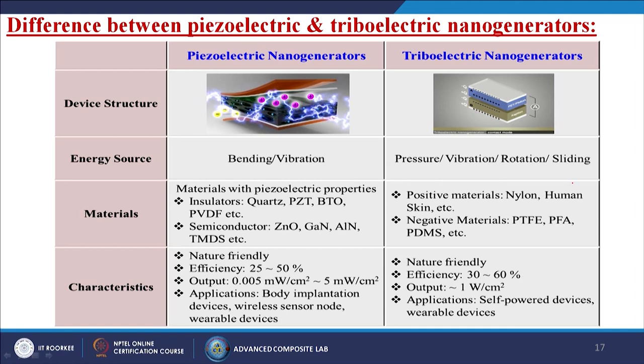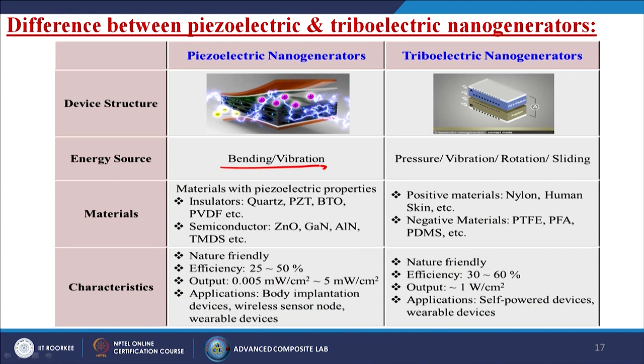Now the basic difference between piezoelectric and triboelectric nanogenerators. Looking at device structures, there are two distinct images — one is the piezoelectric nanogenerator and the other is the triboelectric nanogenerator. The term 'tribo' comes from tribology — 'tribo' means friction in Greek — meaning we generate friction between two surfaces to generate electricity. Piezoelectric is an intrinsic property of the material: if I apply any load or pressure on the material, it automatically generates electricity. In both cases, mechanical energy is converted to electrical energy — in TENG it is through friction; energy sources include pressure, vibration, rotation, or sliding.